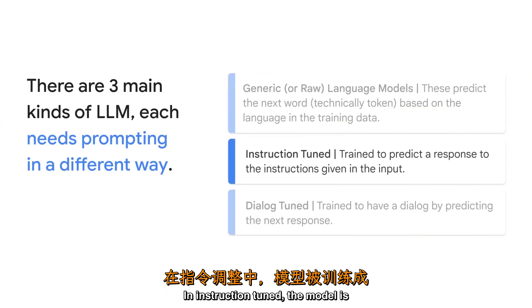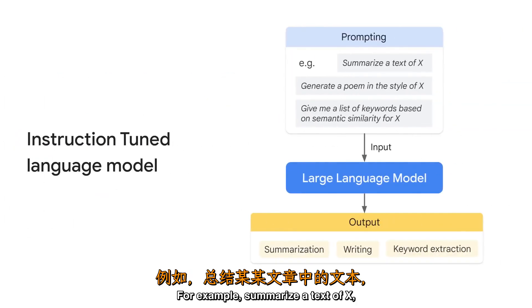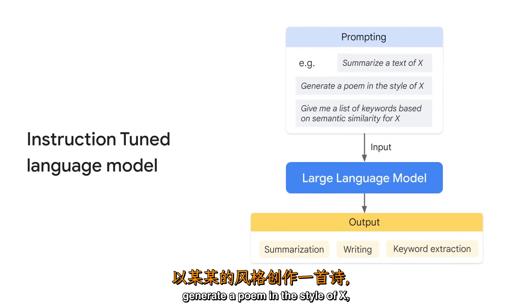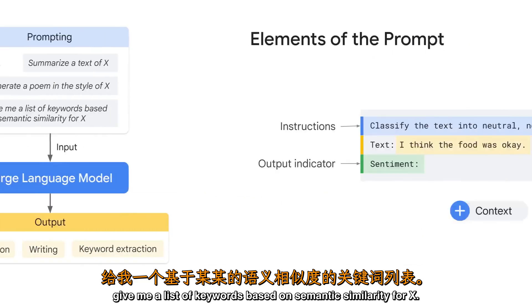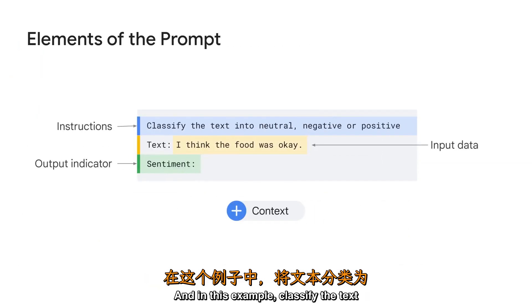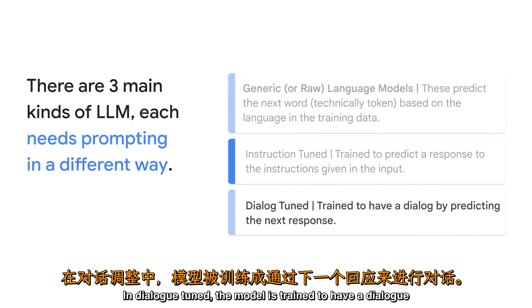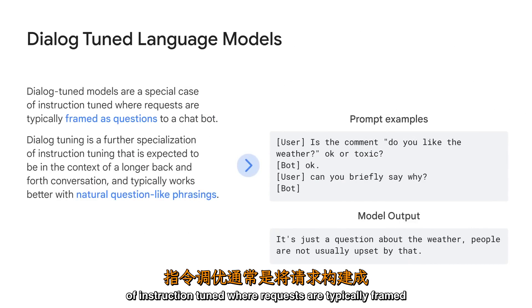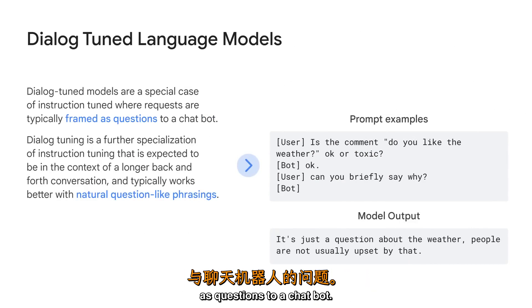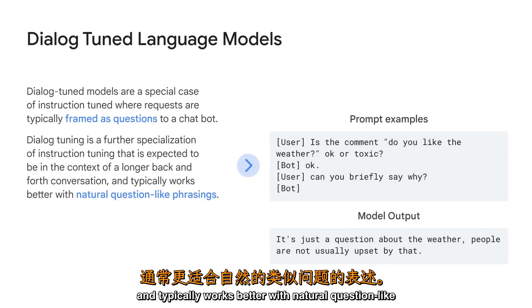In instruction tuned, the model is trained to predict a response to the instructions given in the input — for example, summarize a text of X, generate a poem in the style of X, give me a list of keywords based on semantic similarity for X, or classify the text into neutral, negative, or positive. In dialogue tuned, the model is trained to have a dialogue by predicting the next response. Dialogue tuned models are a special case of instruction tuned where requests are typically framed as questions to a chatbot, and they typically work better with natural, question-like phrasings.